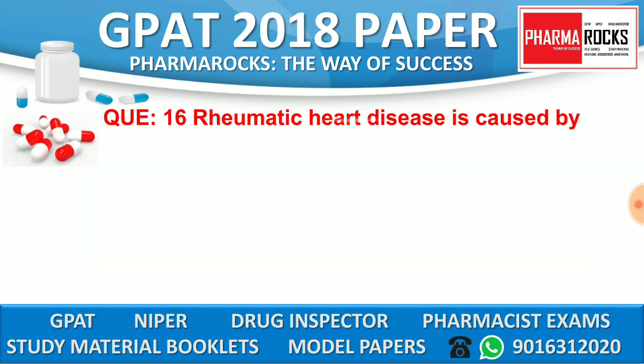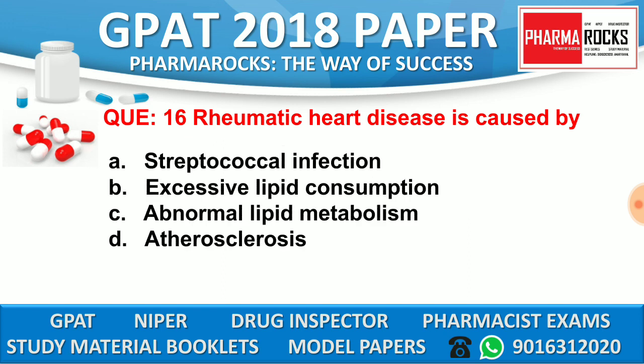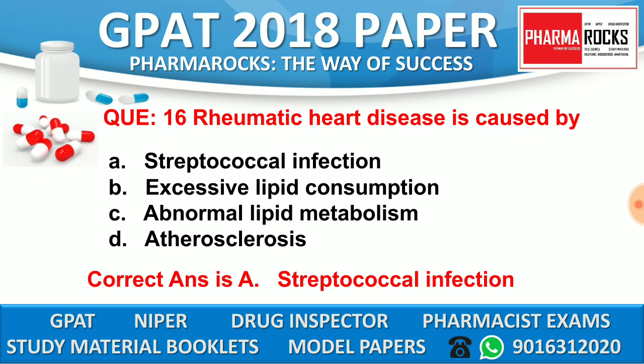Question number 16: Rheumatic heart disease is caused by. Option A: Streptococcal infection. Option B: Excessive lipid consumption. Option C: Abnormal lipid metabolism. Option D: Atherosclerosis. The correct answer is option A, Streptococcal infection. Rheumatic heart disease is caused mainly by Streptococcal infection.